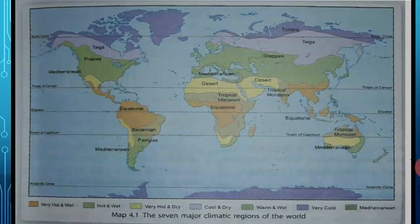The purple color indicates a cool and dry region. The light green color indicates a warm and wet region. The yellow color indicates a very hot and dry region. Orange color indicates a very hot and wet region. Light green with slanting lines indicates the Mediterranean region, and light brown color indicates a hot and wet region.